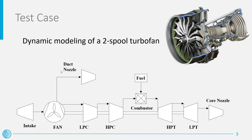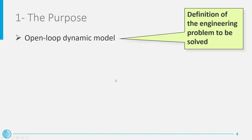Control strategies, algorithms and control parameters can be studied and tested before implementing them in an actual control system, thus partly avoiding the cost and risks connected with experimentation. We can distinguish between two kinds of dynamic models. A dynamic model is called closed-loop if the model includes the controller with feedback loops on the controlled variables. We speak instead about an open-loop dynamic model if the response of the system is not influenced by a feedback loop on the controlled variables. In this lecture, we will focus on the development of an open-loop dynamic model of a turbofan engine.